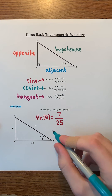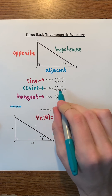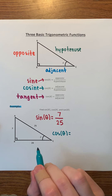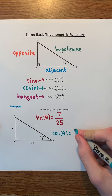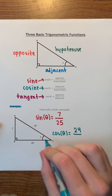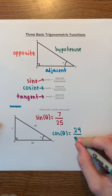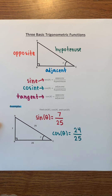Next, we're going to find cosine of theta, which remember is adjacent over hypotenuse. The side adjacent to the angle has a length of 24, and the hypotenuse has a length of 25. Therefore, cosine of theta is 24 over 25.